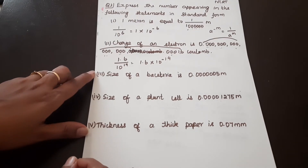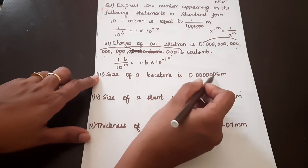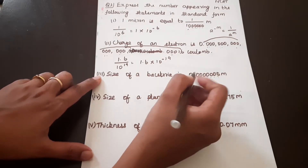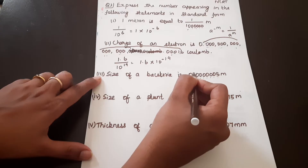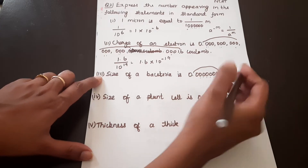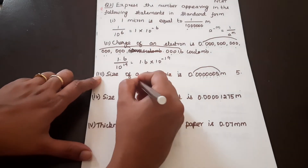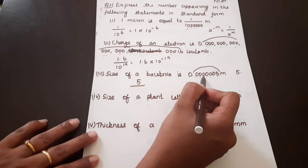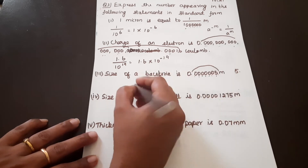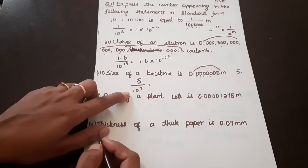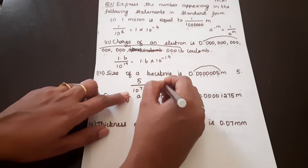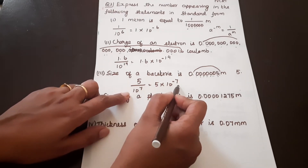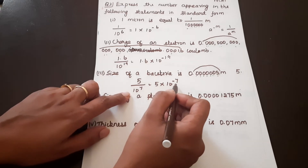Size of a bacteria is 0.0000005 M. We use the standard formula and shift the decimal point. Shifting one number, counting the digits shifted: 1, 2, 3, 4, 5, 6, 7. So 10 raise the power 7. The answer is 5 into 10 raise the power minus 7.